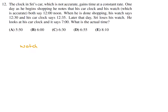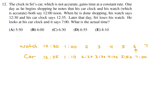We have a watch and a car clock. The watch says 12:30 while the car clock says 12:35 — so every 30 minutes, the car clock gains 5 extra minutes, meaning it gains 10 minutes per hour. At 1 p.m. on the watch, it's 1:10 on the car clock; at 2 p.m. it's 2:20; then 3:30, 4:40, 5:50, and finally 7 p.m. on the car clock corresponds to 6 p.m. actual time. Number 12, the answer is B.